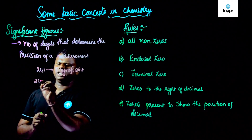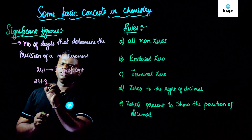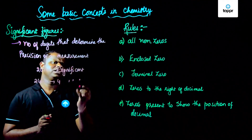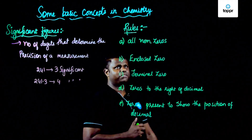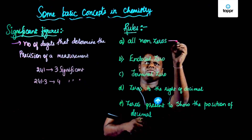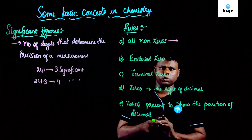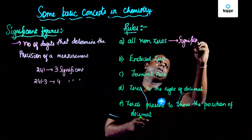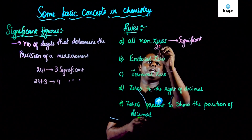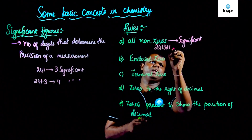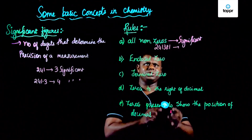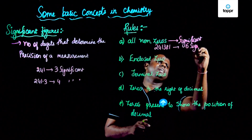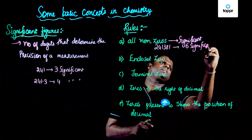There are certain rules for the determination of significant figures. The first rule is: all non-zero digits are significant. For example, if I have something like 241.3.8.1 — if you can see, all are non-zeros. So you have 1, 2, 3, 4, 5, 6 — this is basically six significant figures.